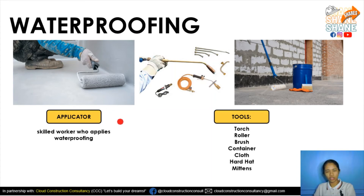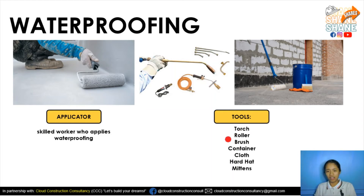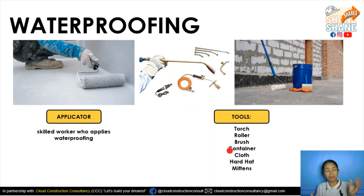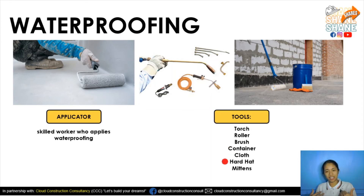What are the tools used for waterproofing? These are the torch, used for the bituminous membrane type; the roller or brush, which are the most common application tools; the container for holding the waterproofing material; solvent for cleaning before or after application; hard hat for site safety; and mittens to protect your hands from chemicals or heat during the waterproofing process.